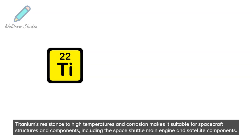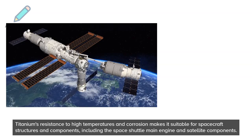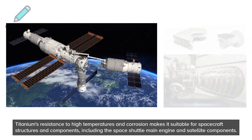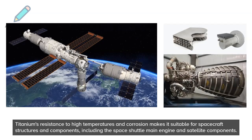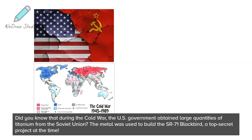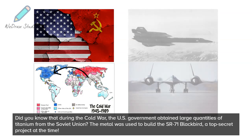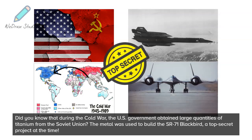Titanium's resistance to high temperatures and corrosion makes it suitable for spacecraft structures and components, including the space shuttle main engine and satellite components. Did you know that during the Cold War, the U.S. government obtained large quantities of titanium from the Soviet Union? The metal was used to build the SR-71 Blackbird, a top-secret project at the time.